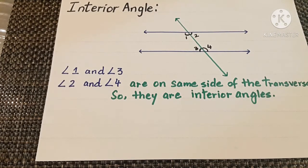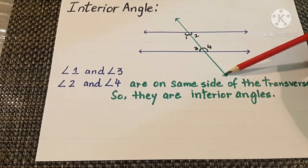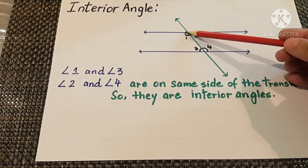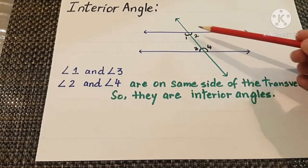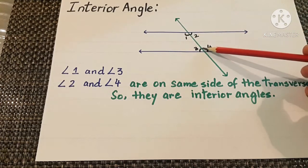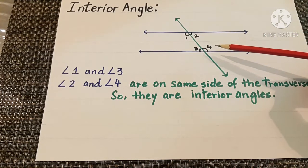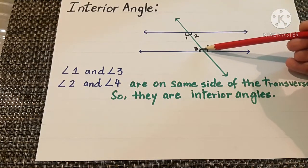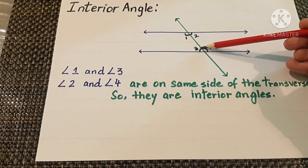Now the concept of interior angles: when two parallel lines are intersected by a transversal, angles 1 and 3, and angles 2 and 4 are known as interior angles because they are on the same side of the transversal and they are inside. Therefore these are the interior angles.